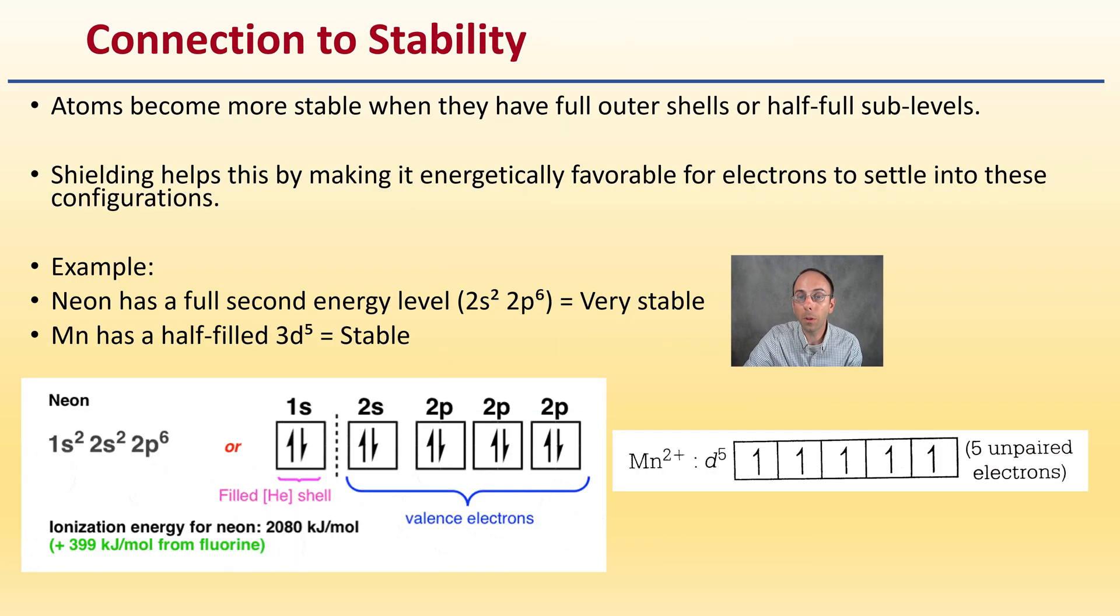Now, connection to stability. Atoms become more stable when they have full outer shells or full sub-levels. Shielding helps this by making it energetically favorable for electrons to settle into these configurations. Neon has a full second energy level, as we can see right here with the 2s² and the 2p⁶. Therefore, it is very stable.